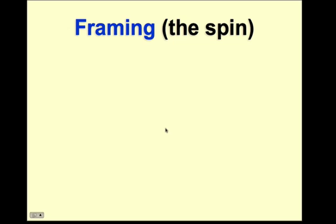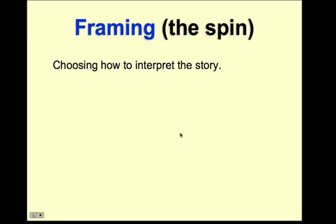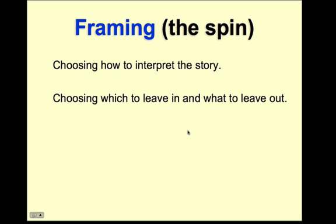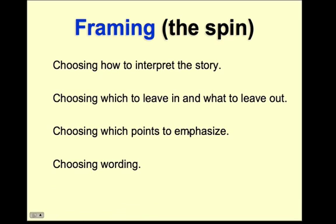So we're going to talk a little bit about framing, which is a part of agenda setting theory. And it's, you could refer to it as the spin. Now, your cognitive model or your schema for this word is that it's negative. You know, that framing, somebody is manipulating, they're not reporting it accurately. Well, they could be, but they don't have to be. Because the fact of the matter is, you know, you're going to have humans who are trying to prepare the news, or prepare a story. And they have to choose how to interpret that story. They have to choose what to leave in, what to leave out. They have to choose which points to emphasize. And they have to choose the wording.